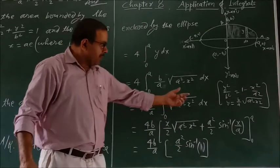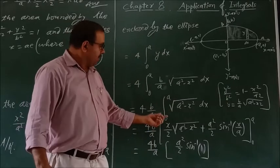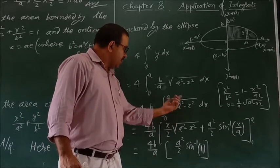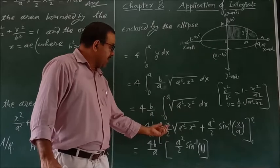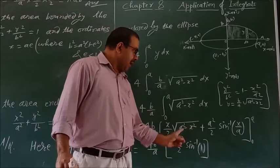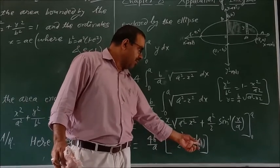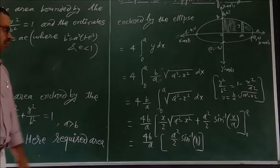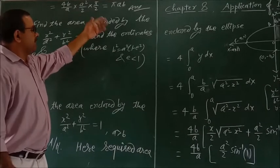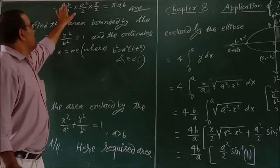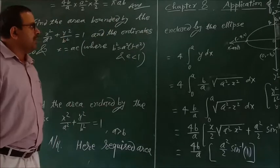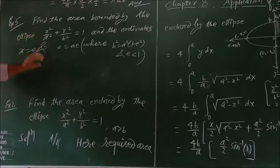Here b/a is a constant quantity. The limit goes from 0 to a of √(a² − x²) dx. Using the standard formula, the integration of √(a² − x²) dx equals (x/2)√(a² − x²) + (a²/2) sin⁻¹(x/a), evaluated from 0 to a. After putting the upper and lower limits, we get (a²/2) sin⁻¹(1). And finally, we get 4b/a × (a²/2) × (π/2), which gives πab square units — the area of the ellipse.